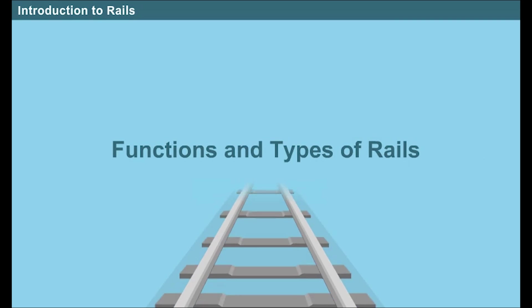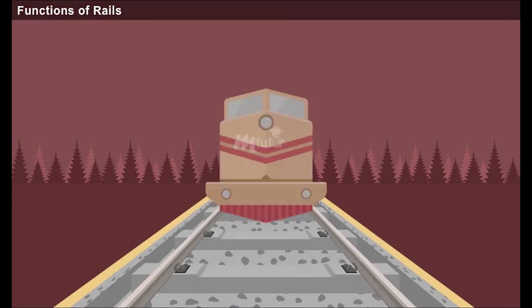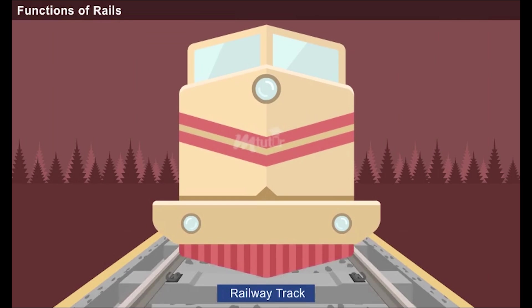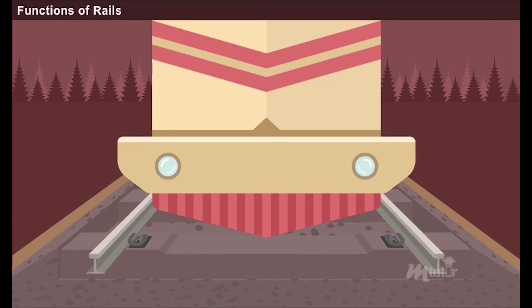Rails are the components of a railway track which are laid in two parallel lines. These two rails are separated by a definite distance called as the gauge. They provide a clear cover between the wheelbase and the sleeper ballast layer by uplifting the train from the ground level.